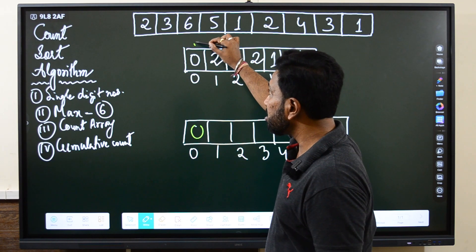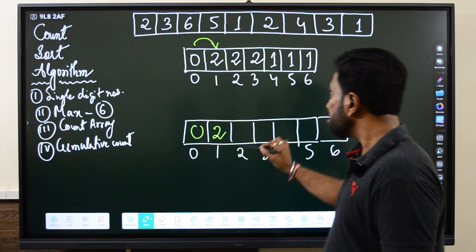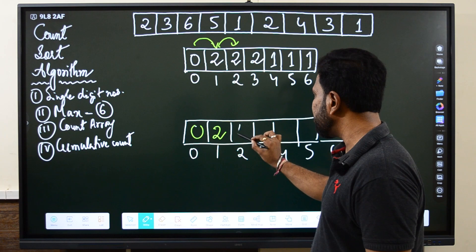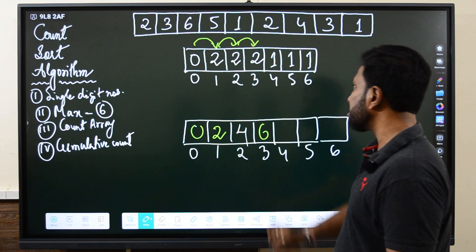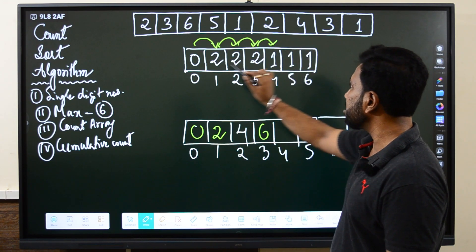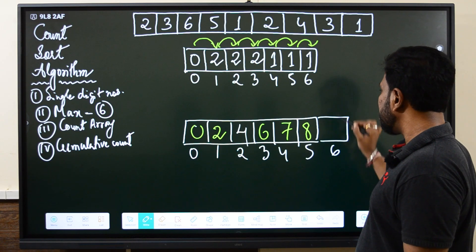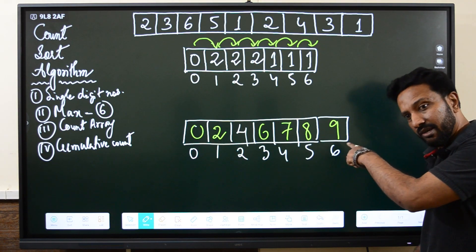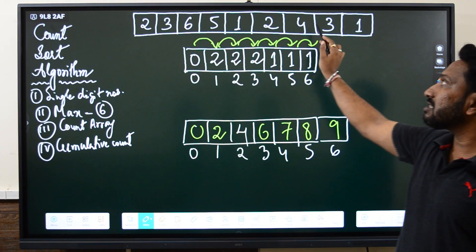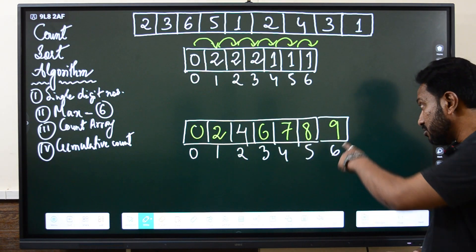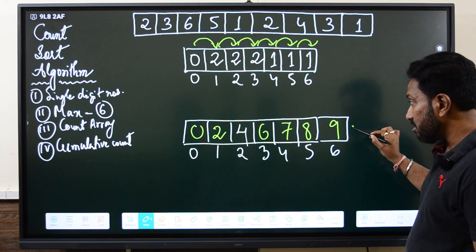This zero will directly come here. For the next one it is zero plus two, current plus previous, so this becomes two. Now again two plus two is four. Then it is two plus two plus two, that is six. And then again two plus one, that is seven. Then again seven plus one becomes eight. Eight plus one is nine. Now this nine should be equal to the total length of your array. There are nine elements in the array and this should be exactly equal to that. If it is not then there is something wrong with your calculation. This is the cumulative count.